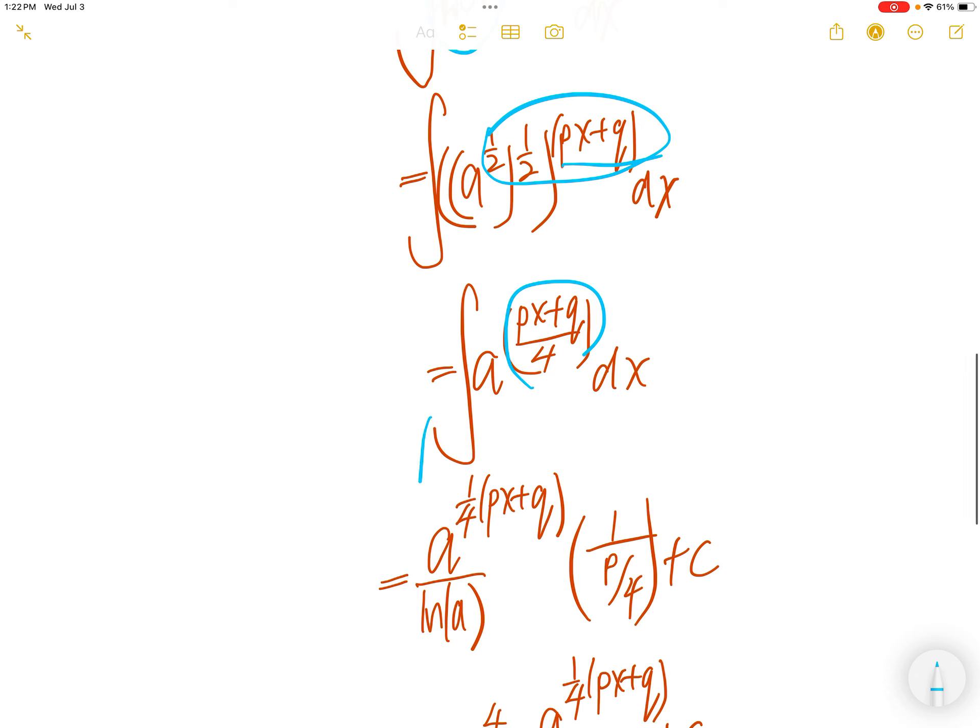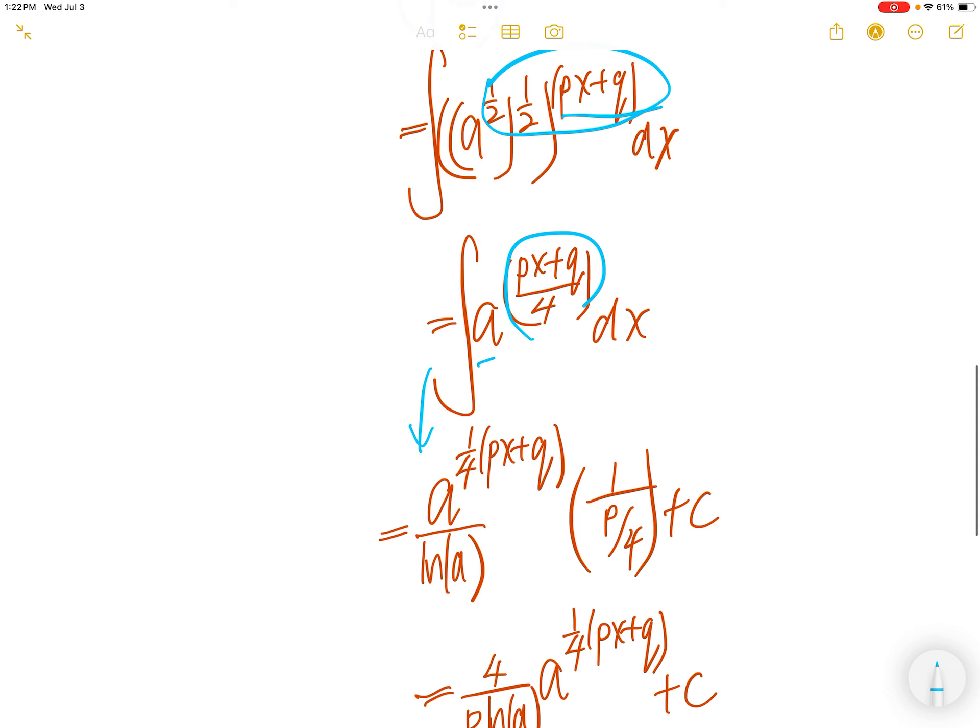Now we can take the integral. The integral of this exponential is written as the function divided by ln of the base. Then check for the correction coefficient. The coefficient is 1, but here it's p/4, so you have to divide by p/4.